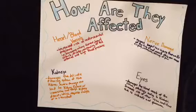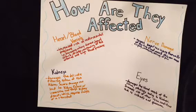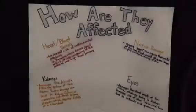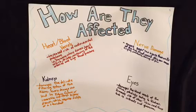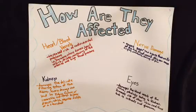But how are they affected? For the heart and blood vessels, diabetes can increase the risk of cardiovascular problems. For nerve damage, excess sugar can injure the walls of the tiny blood vessels, causing tingling, numbness, burning, or pain. For kidneys, it damages the delicate filtering system, and severe damage can lead to kidney failure or irreversible end-stage kidney disease, which requires dialysis or a transplant. For eyes, it damages the blood vessels of the retina, potentially leading to blindness, and increases the risk of vision conditions such as cataracts and glaucoma.